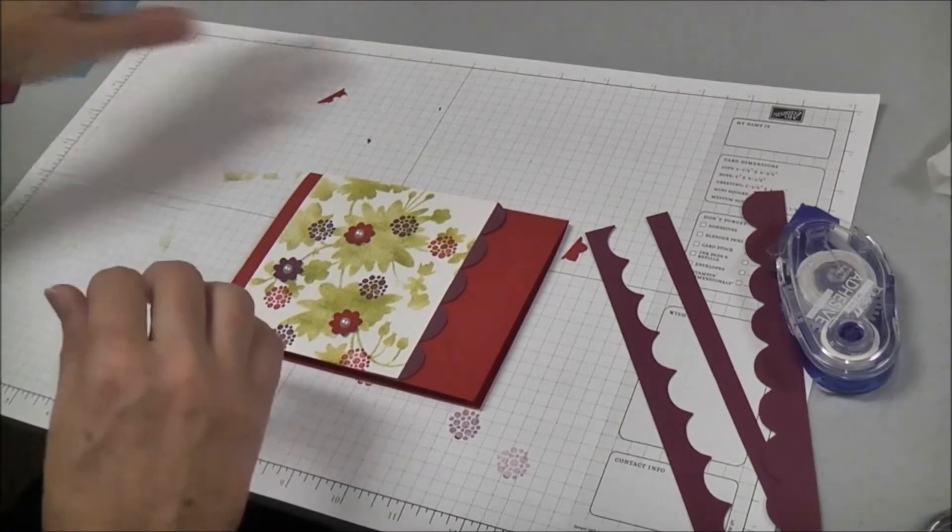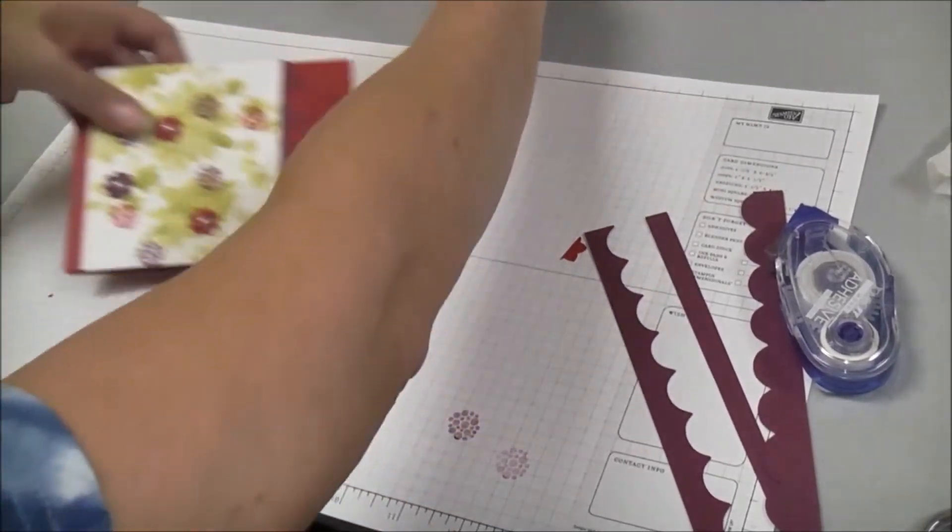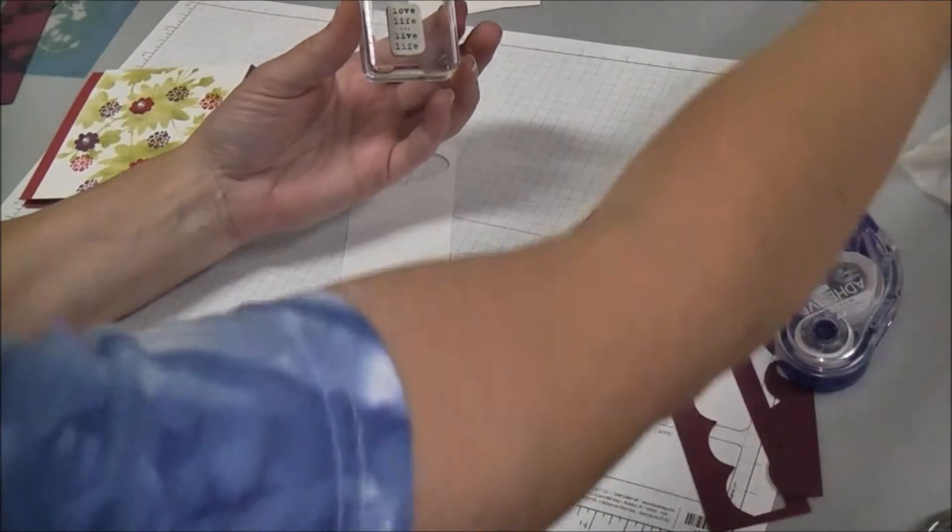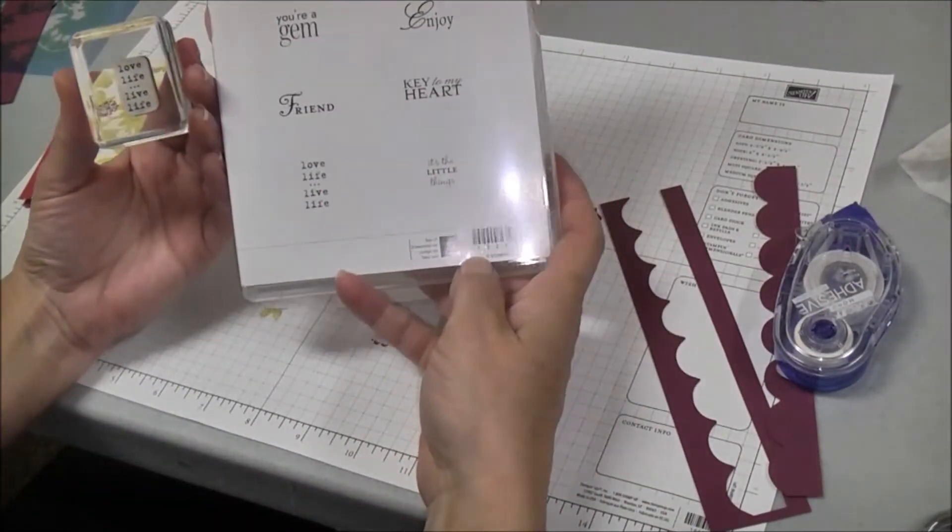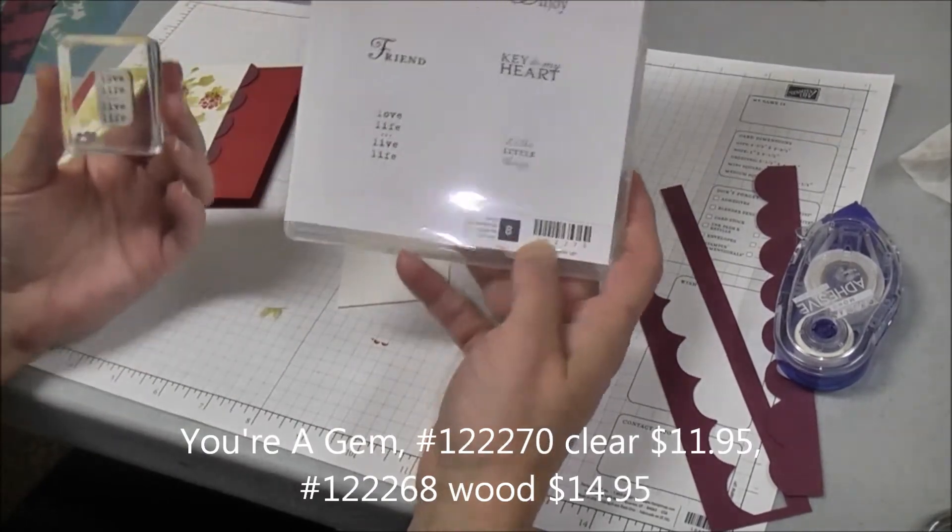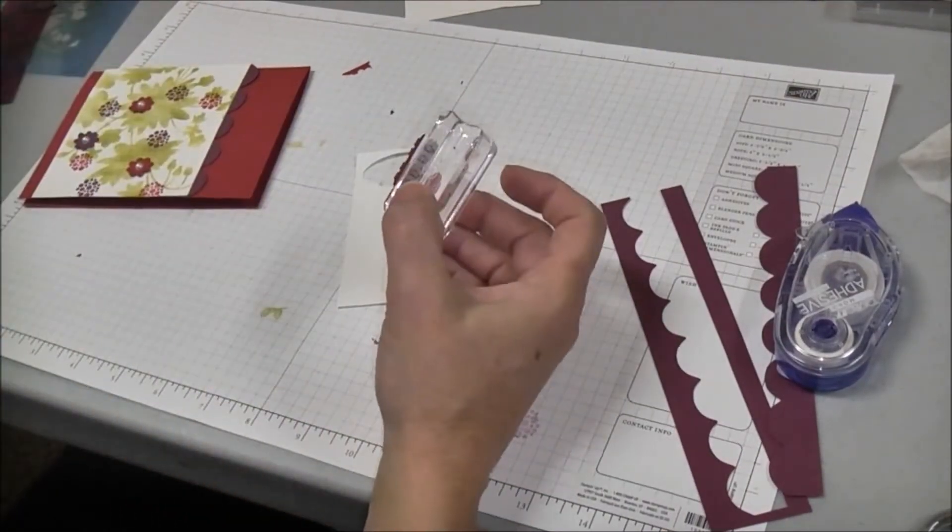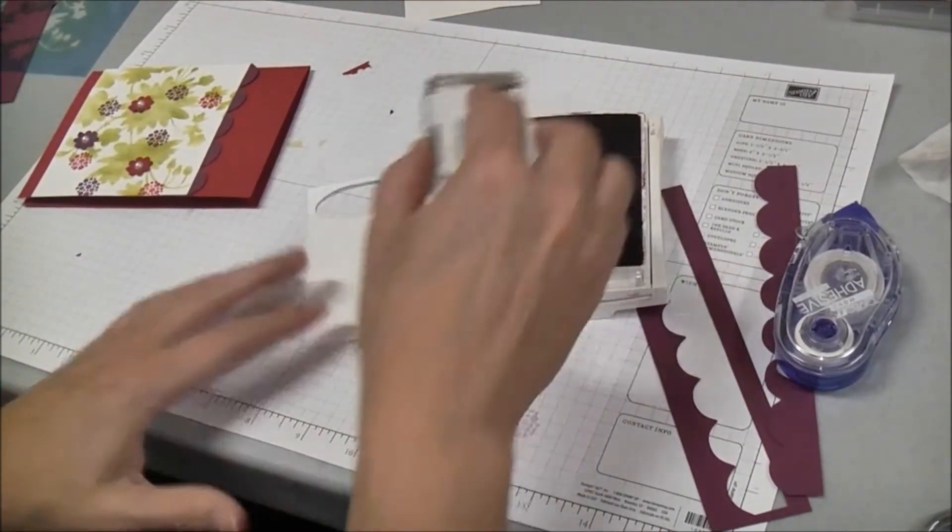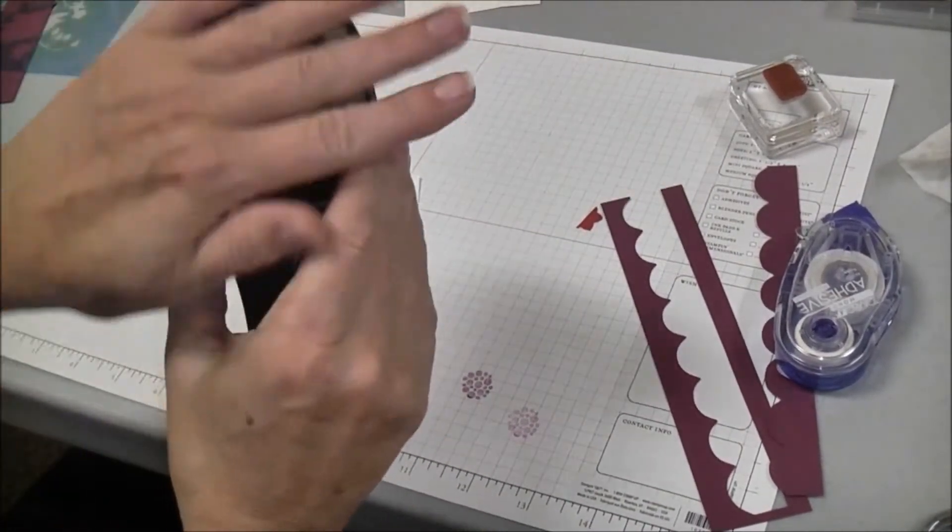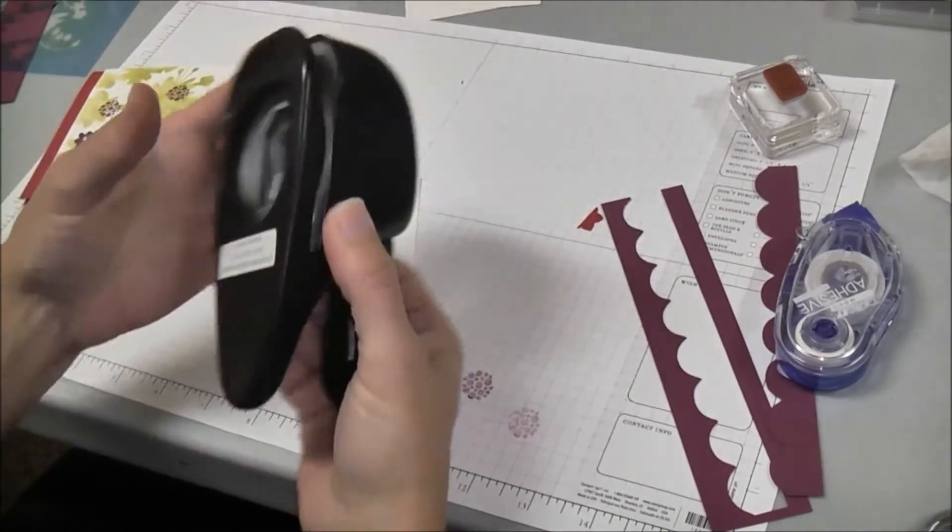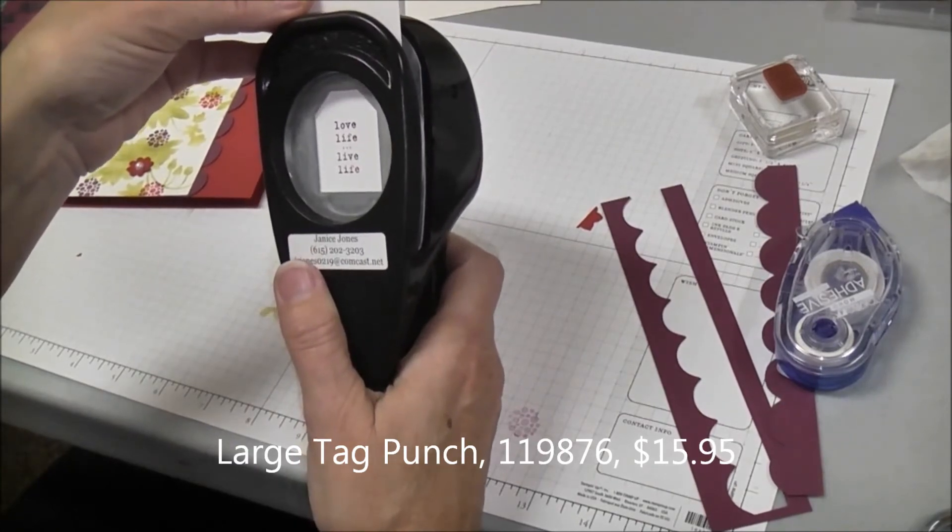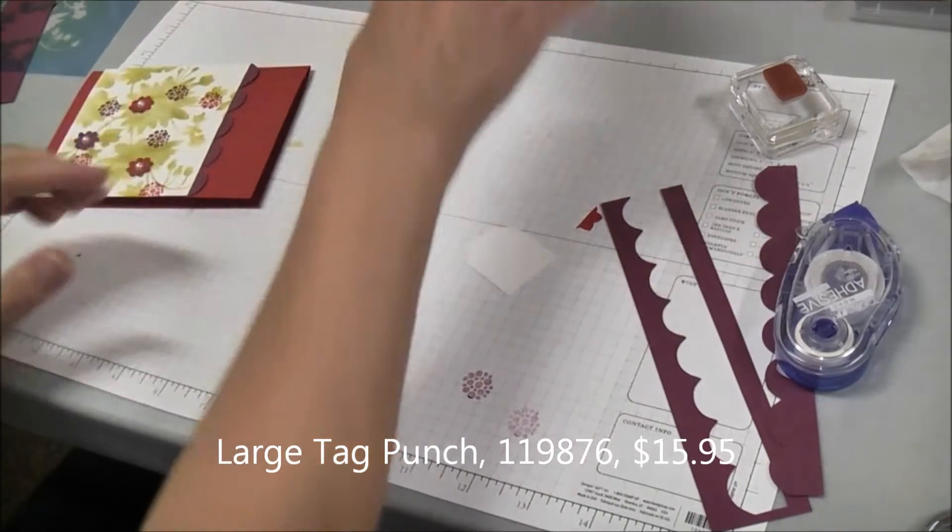The last thing we're going to do to decorate this card is take just a scrap piece of white and rich razzleberry, and we're going to use the love life phrase from You're a Gem stamp set. This stamp set is being retired this month so May 31st will be the last date you can order that. We're going to use some rich razzleberry and just stamp that on, and then we're going to use our large tag punch. The large tag punch is also being retired so if you like the punch or that stamp set you need to get it while you can.